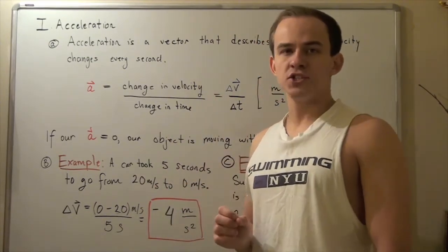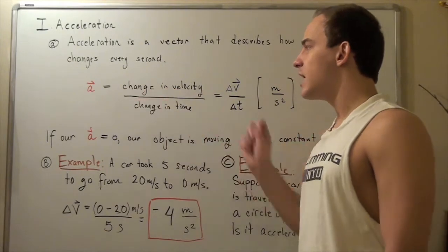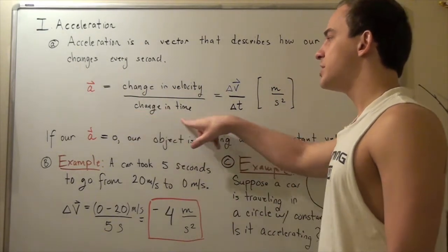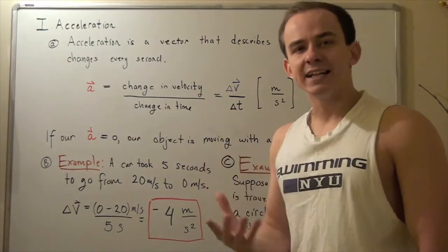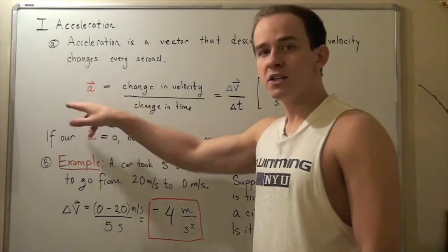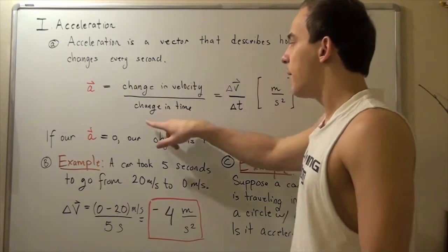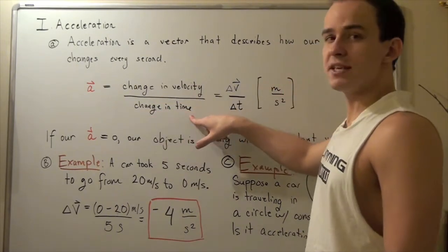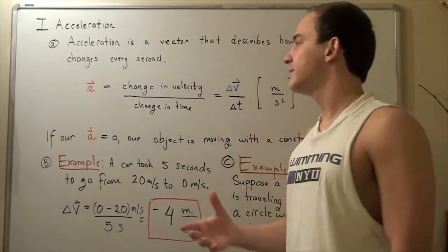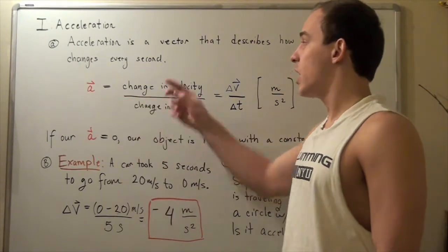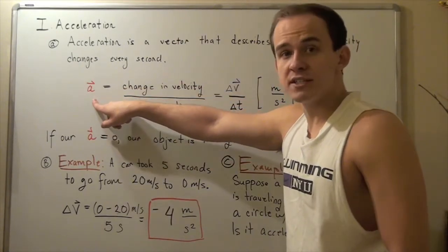The formula for acceleration is change in velocity divided by change in time (Δv/Δt). If you forget that acceleration is a vector, remember that velocity is a vector. And if you divide a vector by a scalar, because time is a scalar, you will always get a vector. That's why acceleration is a vector.